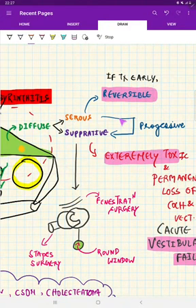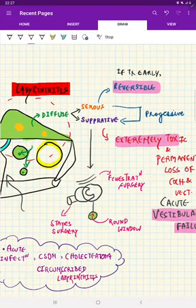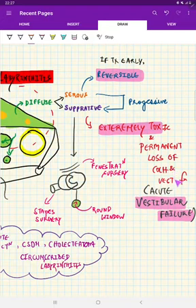But supposing if you are not picking it and there is no treatment started at the right time, then it progresses to suppurative labyrinthitis. This suppurative diffuse labyrinthitis is where the pyogenic infection is going to set in. And at the time when this patient is presenting with diffuse suppurative labyrinthitis, he or she will be in extremely toxic condition. Sometimes the person can even go into a permanent loss of cochlear and vestibular function, that is called acute vestibular failure in diffuse suppurative labyrinthitis.